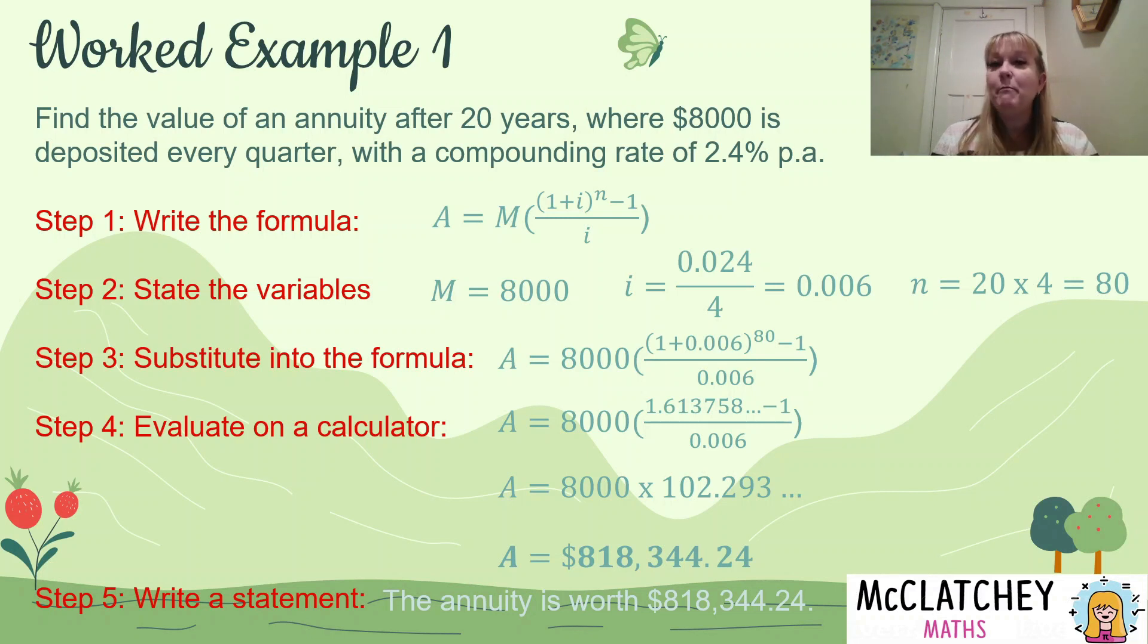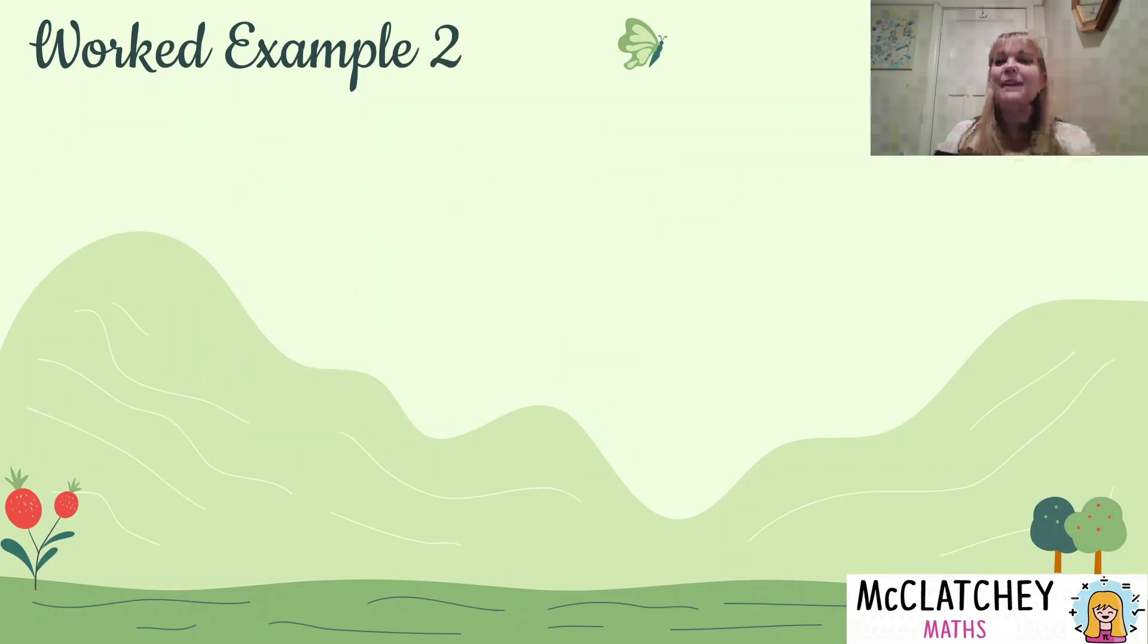So whenever you do these kind of annuities questions, long period of time, power of compounding interest, you are expecting a big amount of money. If you'd get something very small, you know you've probably done something wrong. Let's look at our second example.